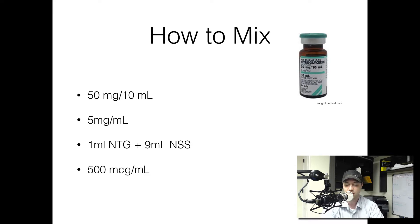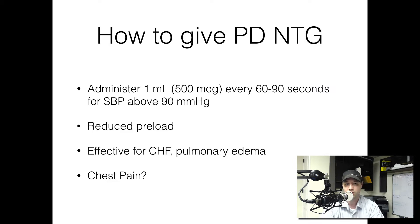Now, you might be saying the tablets are 400 micrograms, so why would we give more? The data and the evidence just don't really pan out that that 100 micrograms makes too much of a difference. Here's how we're going to give it: 1 ml — 500 micrograms — every 60 to 90 seconds, for a systolic above 90 millimeters of mercury.